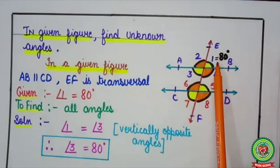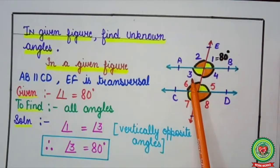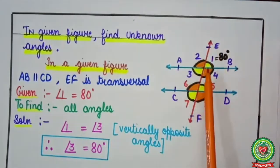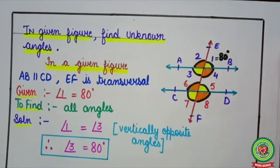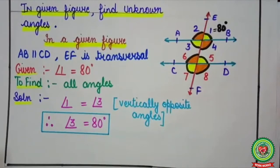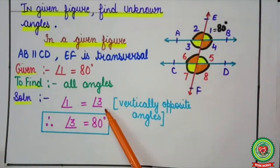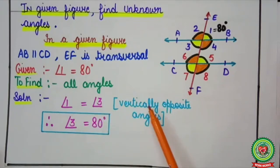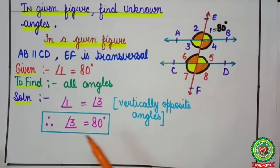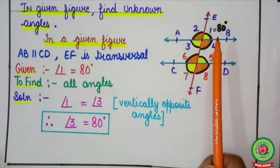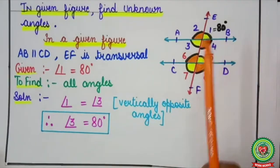Angle 1 and angle 3 are forming an X shape, so these are vertically opposite angles. We know vertically opposite angles are equal. Therefore, angle 1 equals angle 3. Reason: vertically opposite angles. Therefore, angle 3 equals 80 degrees, because angle 1 was given as 80 degrees.